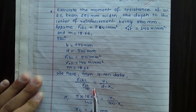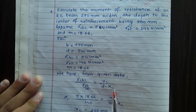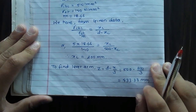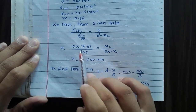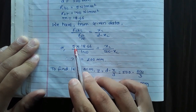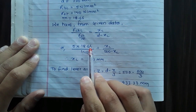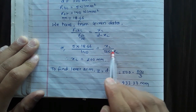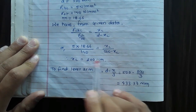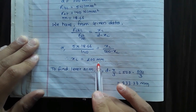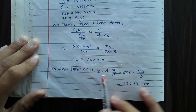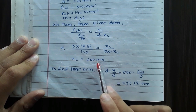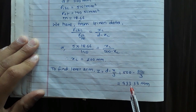Using the formula σCBC / (σST / M) = XC / (D - XC), substituting the values, XC = 200 mm. To find lever arm: Z = D - X/3 = 500 - 200/3 = 433.33 mm.